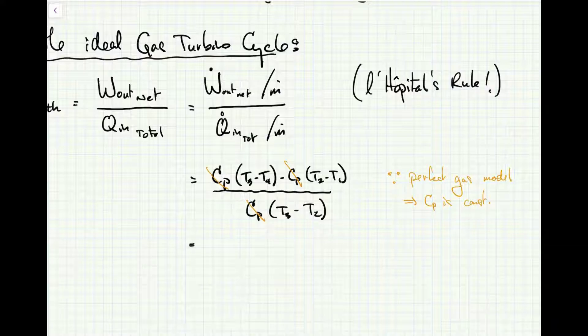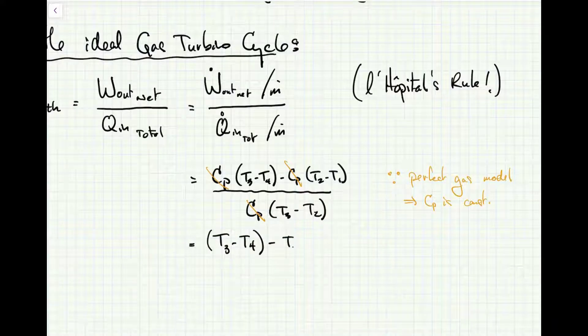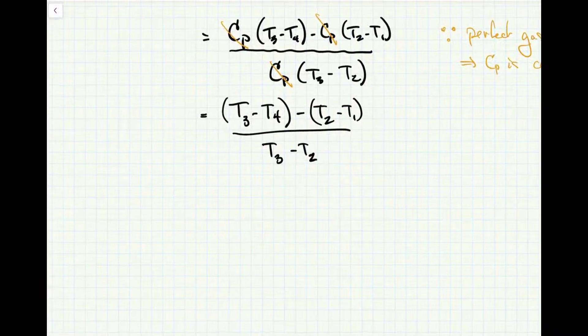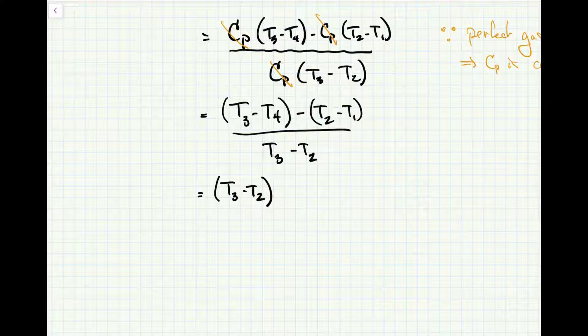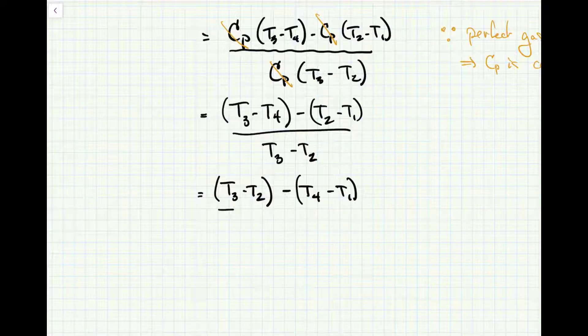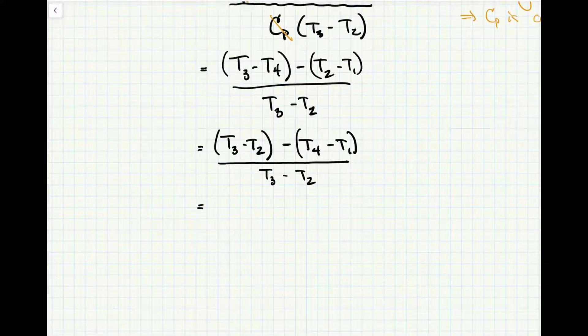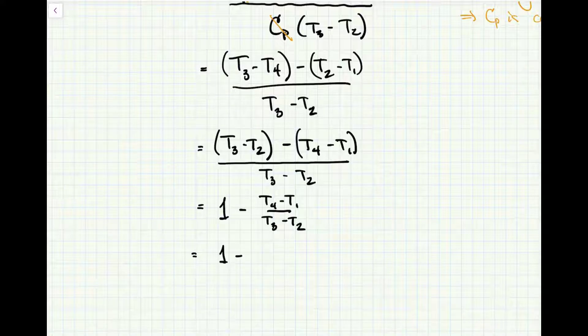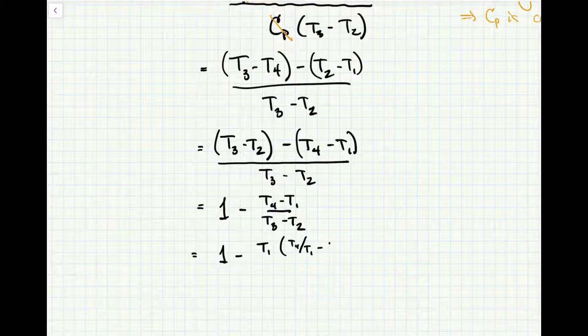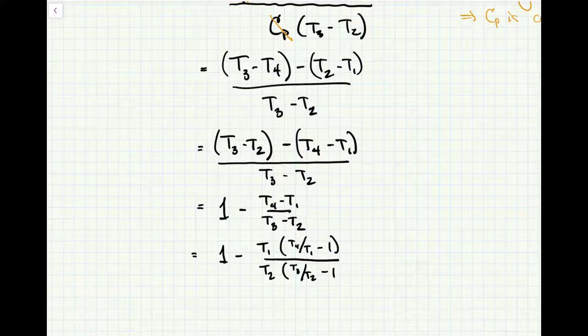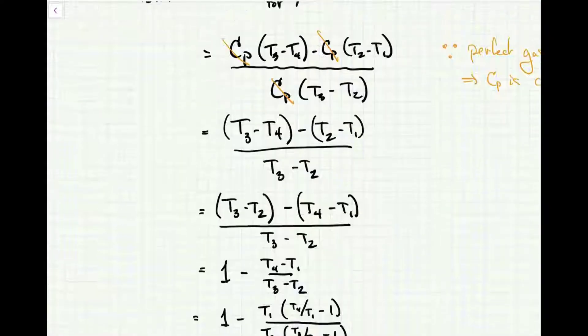So I end up with a ratio of temperatures, a much nicer result which I'm going to rearrange in a moment. Hopefully this is looking familiar since you've done a similar exercise with the Otto cycle before. Let me pull out T_3 minus T_2 on the top so I'm able to do some cancellation with the denominator. I'm going to pull out T_1 over T_2, and that looks just like the Otto cycle.